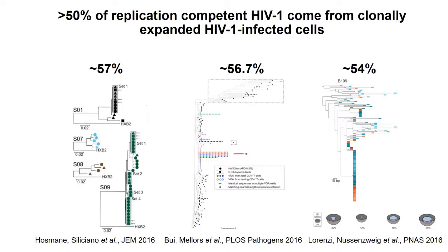There's a paper by Ragnar 2013 that doesn't get cited much, which shows that the total number of cells infected with HIV stays about the same, but the number of unique total infected cells goes down quite rapidly — and they are replaced by proliferating cells. So if you look at this pattern in different stages of infection, you'll see different dynamics.